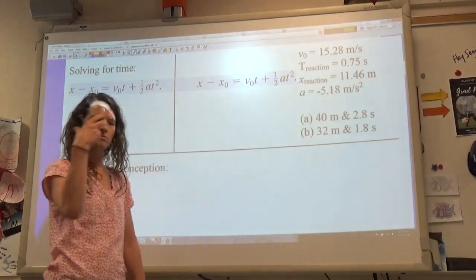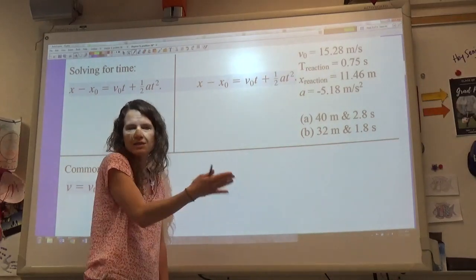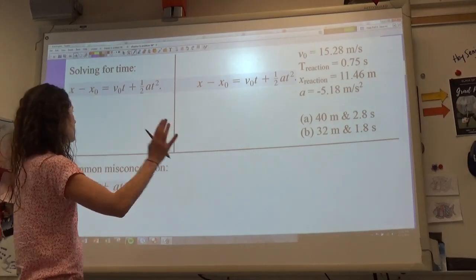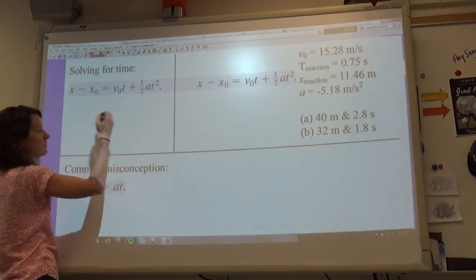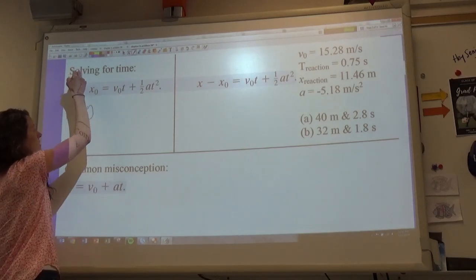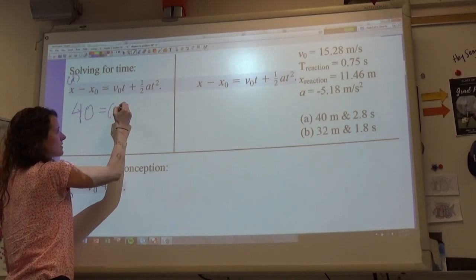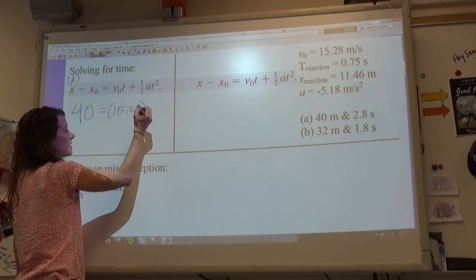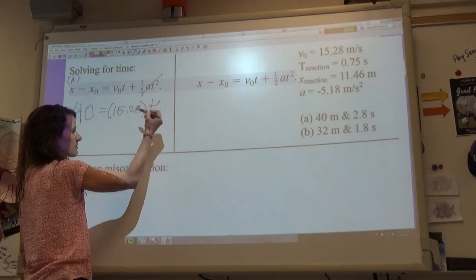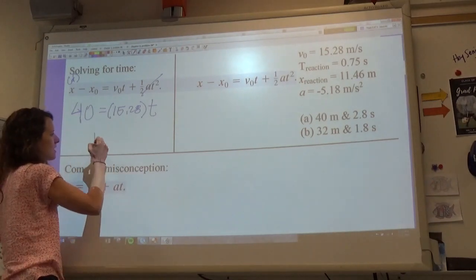Because the entire time I will not accelerate, I will just continue on at that constant velocity. And so if I do that, I know that my distance I want to travel is 40 meters per part A, and my velocity is 15.28, and of course our acceleration is nothing, but I want to multiply by time, and I'm solving for this time. And so if I do this, I find out that this time is 2.62 seconds.